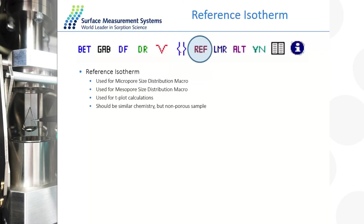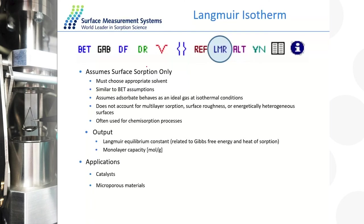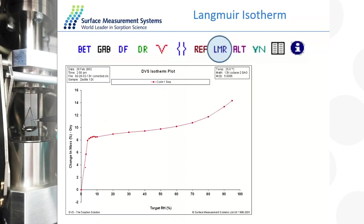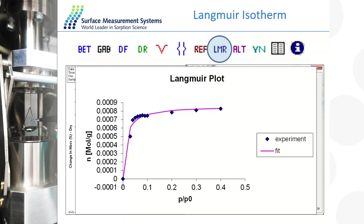The Langmuir plot is another commonly used model — it's basically a type 1 isotherm showing surface adsorption only. Using the zeolite with octane as an example, the uptake shows typical Langmuir behavior, which basically assumes a monolayer forms and nothing else.